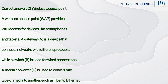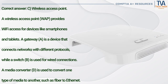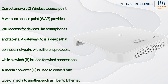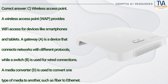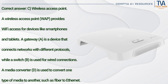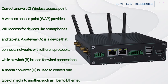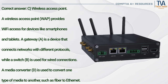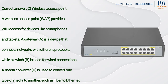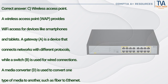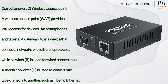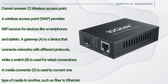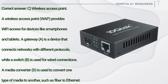Correct answer: C. Wireless access point. A wireless access point (WAP) provides Wi-Fi access for devices like smartphones and tablets. A gateway (A) is a device that connects networks with different protocols, while a switch (B) is used for wired connections. A media converter (D) is used to convert one type of media to another, such as fiber to Ethernet.